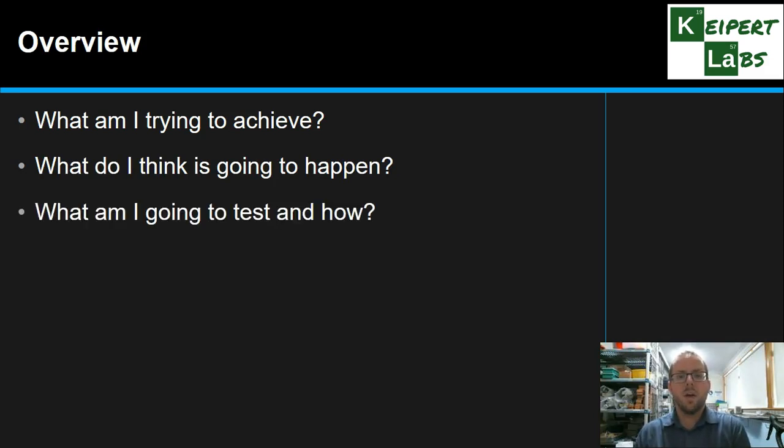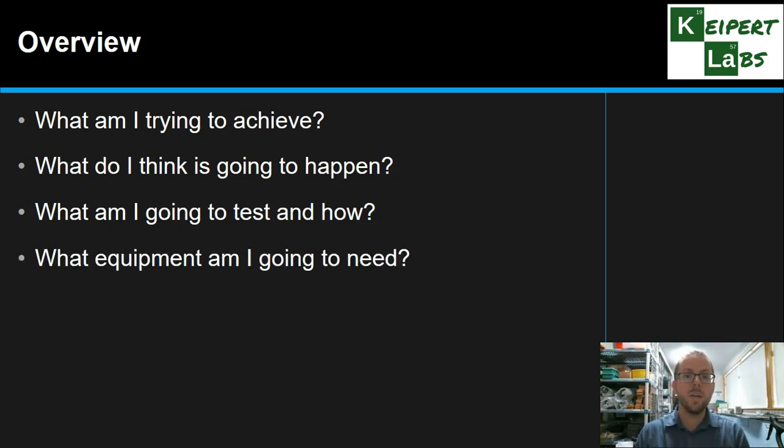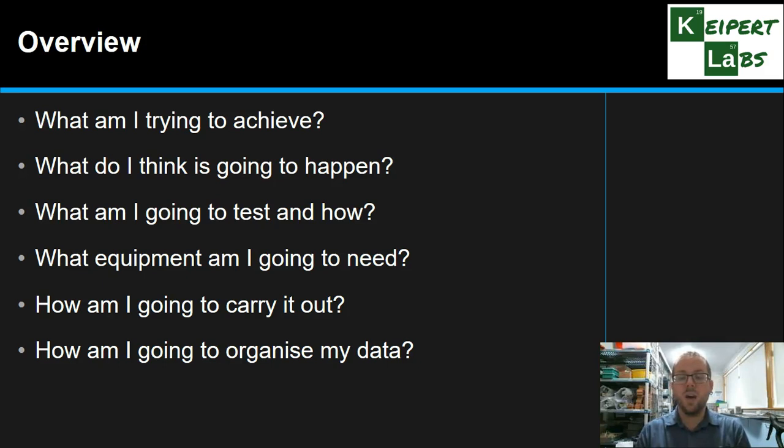We're going to start by thinking about what are you trying to achieve when we're thinking about a purpose for our experiment. What do you think is going to happen when you start? What are you going to test and how are you going to test it? What equipment are you going to need in order to do your investigation? What steps are you going to follow? How are you going to carry it out? And then how are you going to organize and collect your data? And then once you have your data, how are you going to display it in order to get meaning from it? We're going to go through each of these things in turn.